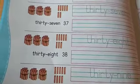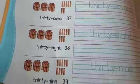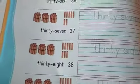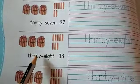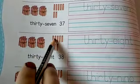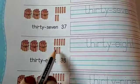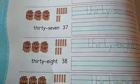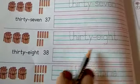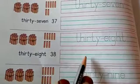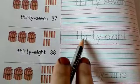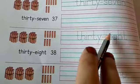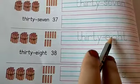Next one is 38 — three bundles of 10s and eight extra stumps: 1, 2, 3, 4, 5, 6, 7, 8. So 38. First trace the letters and then rewrite the same in this column. T-H-I-R-T-Y-E-I-G-H-T, thirty-eight.